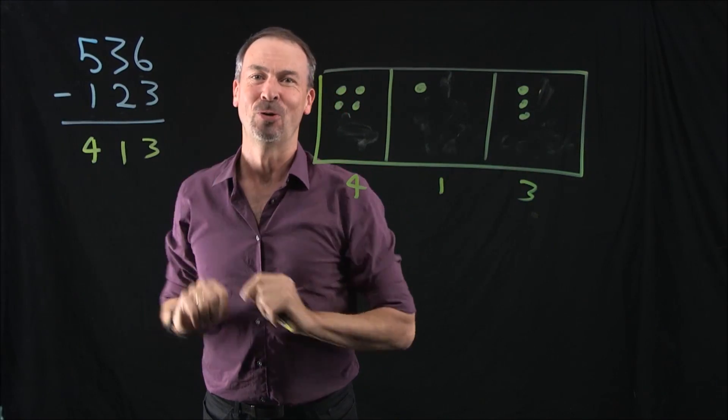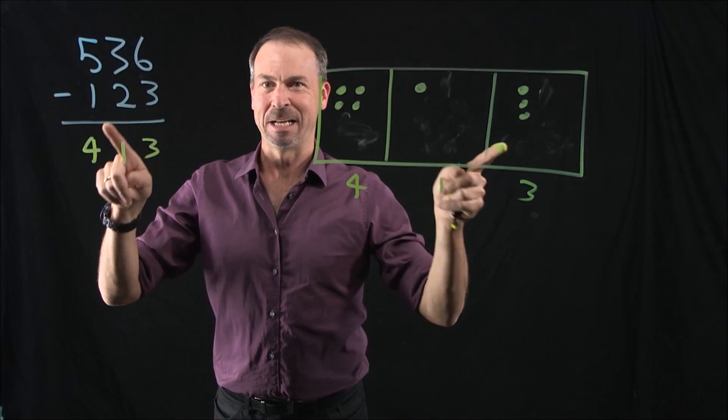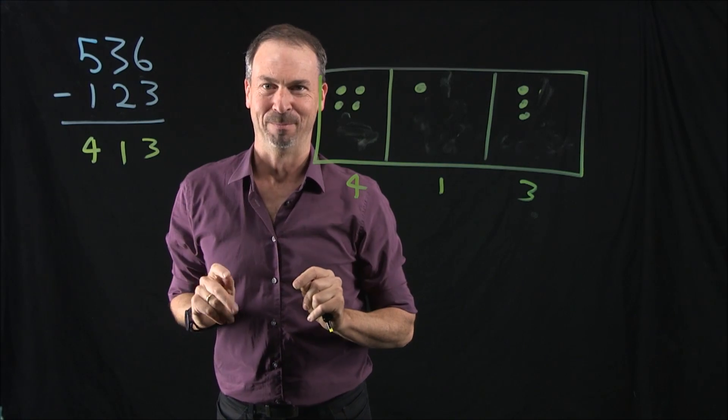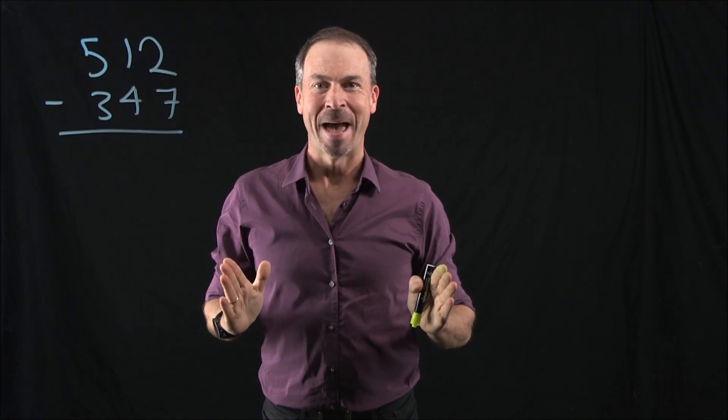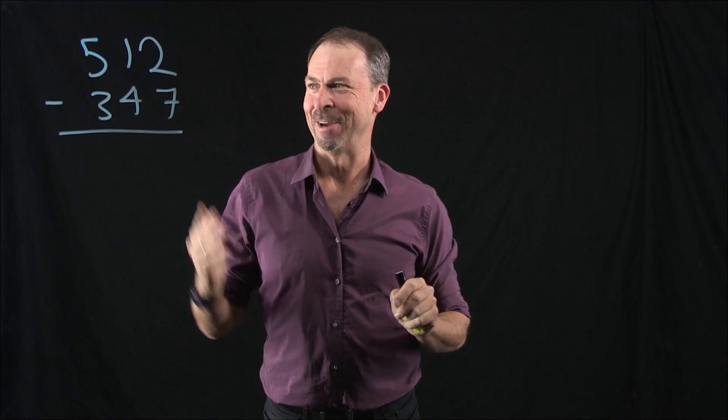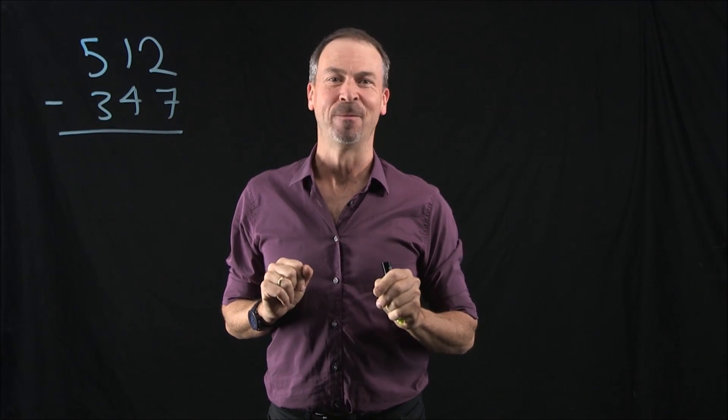But I know you're probably thinking that was too nice a problem. So let me now clean the board and do a more complicated problem. Okay, I'm back with a more complicated problem. Here goes: 512 take away 347.